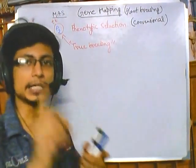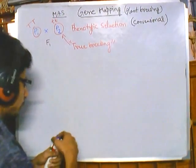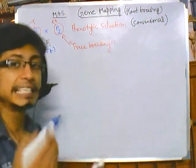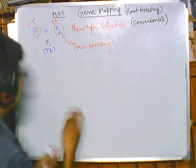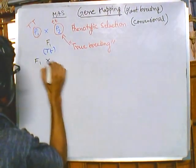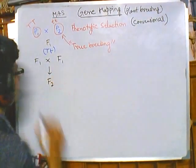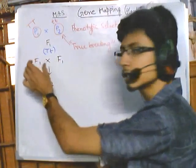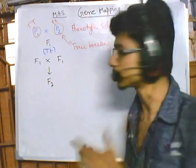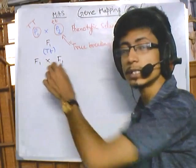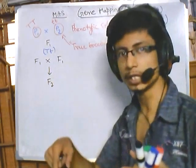After crossing homozygous parents, the F1 generation is generated. All offspring of F1 must have capital T small t according to Mendelian inheritance, so all of them will be heterozygous. We then take two F1 plants and cross them together to generate F2 plants. In the F2 generation, we can get combinations like capital T capital T and small t small t.